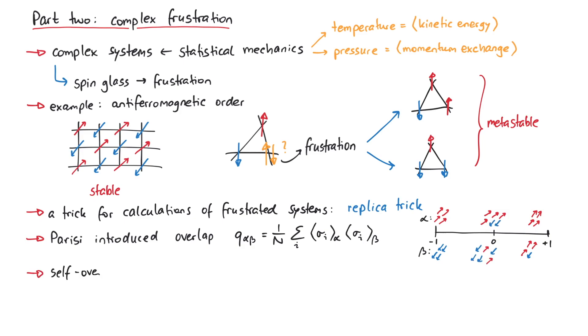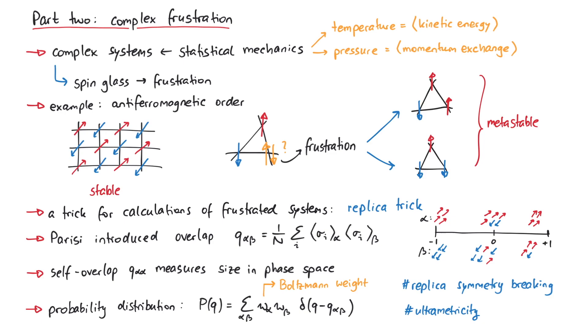Furthermore, the self-overlap q alpha alpha measures the size of the state in phase space, where a large q alpha alpha means less phase space, that is, the realization is less probable. Using this overlap q alpha beta, it is possible to define a probability distribution of overlaps, p of q, which tells us how similar or correlated all the replicas are. There are a lot more topics to cover here, like replica symmetry breaking or ultrometricity, which we will hopefully discuss in another video.